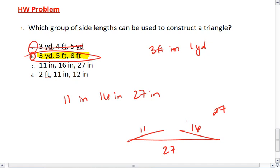The sides will meet, but they're going to meet together on the length of 27. They're just going to create a straight line. It's not going to be a triangle. Option C is out.